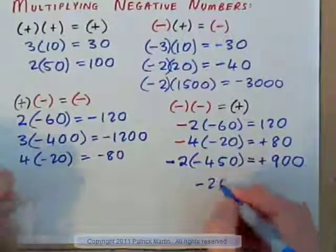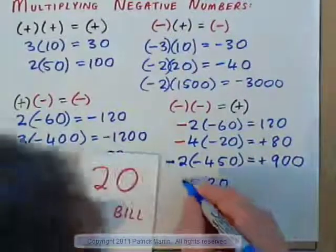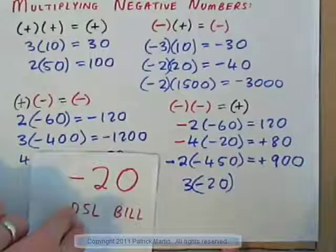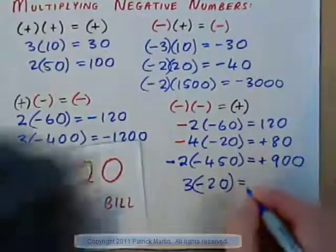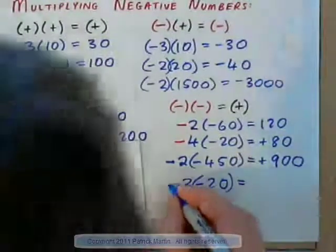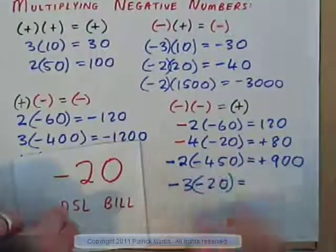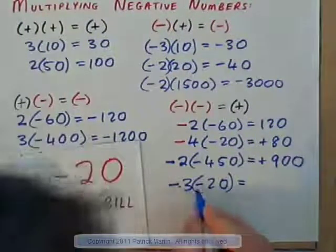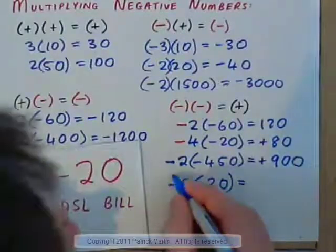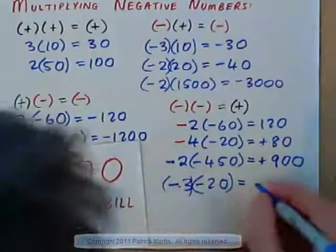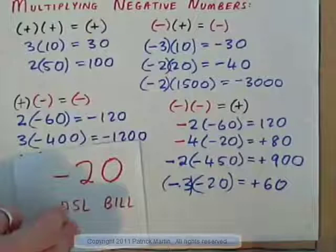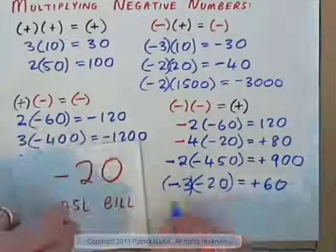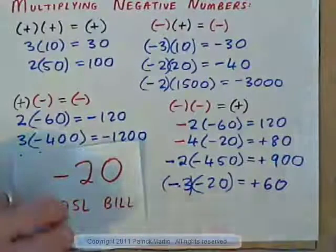Here's your DSL bill of $20. Three of those DSL bills is like a negative $60. Your friend comes to town and says, I'll pay those — I've got a good job — I'm going to take away your three DSL bills for you. To cancel three negatives is like multiplying negative 3 times negative 20. Your friend is giving you $60. So canceling bills is like multiplying a negative times a negative, and that gives a positive.